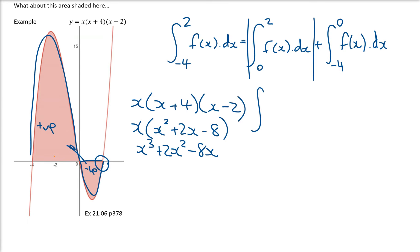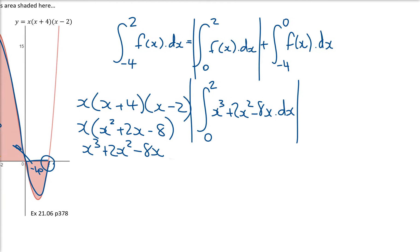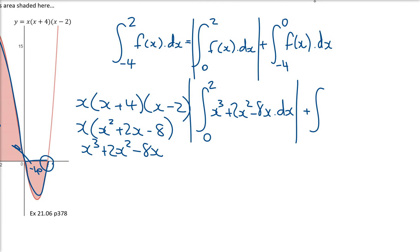Now what I'm integrating is between 2 and 0 of x cubed plus 2x squared minus 8x with respect to x, making sure I've got the absolute value of that. We're going to add on the integral from 0 to negative 4 of the same thing. So far, all good. Any questions?